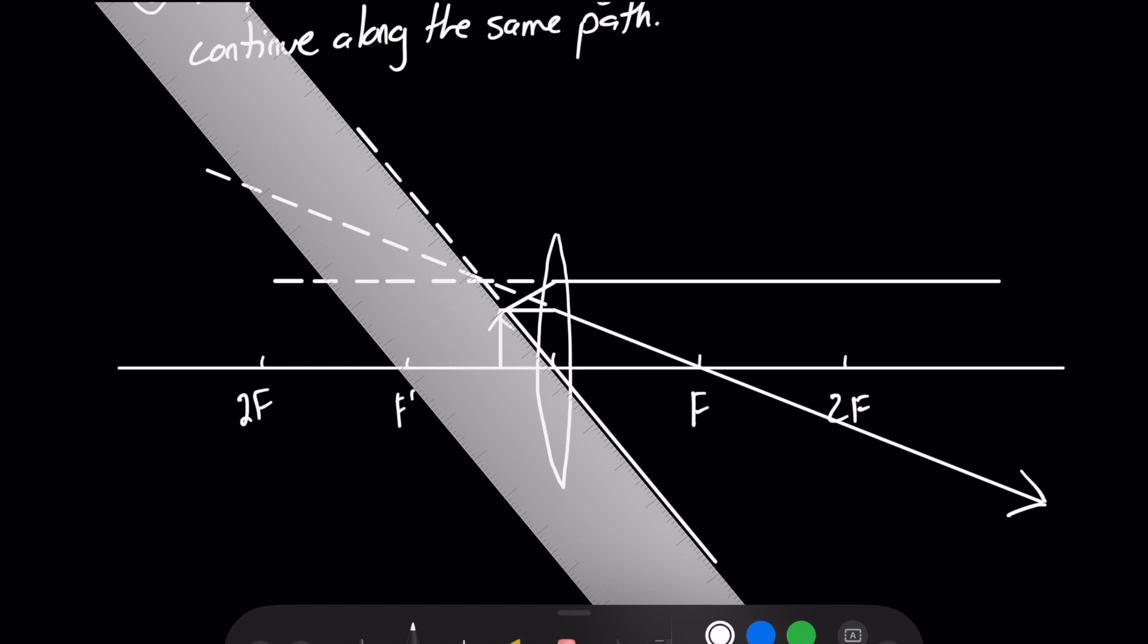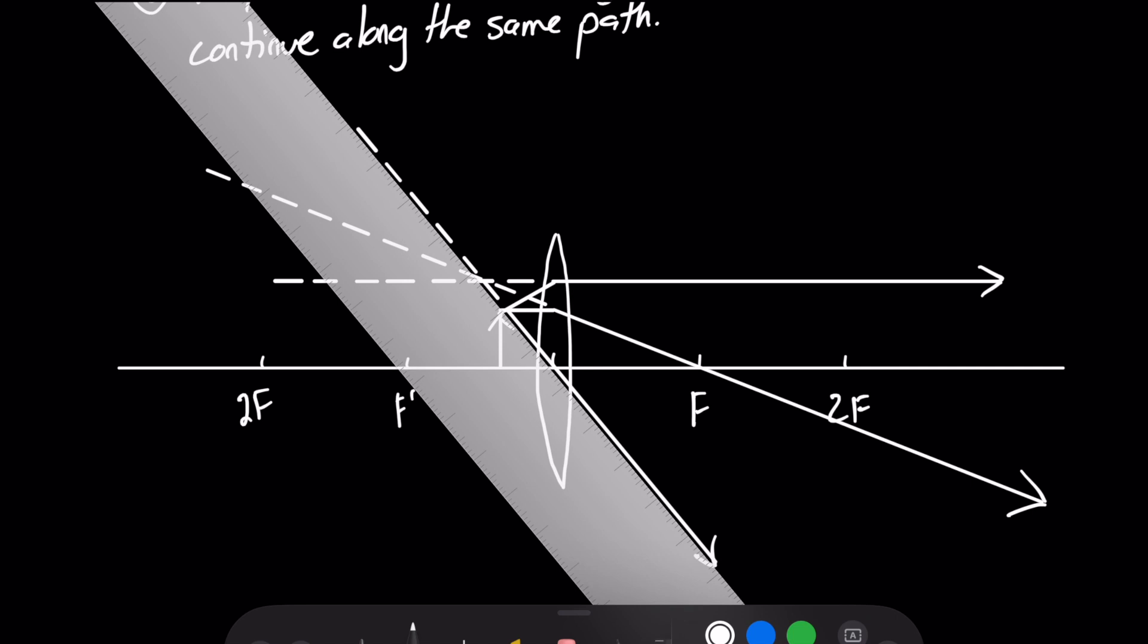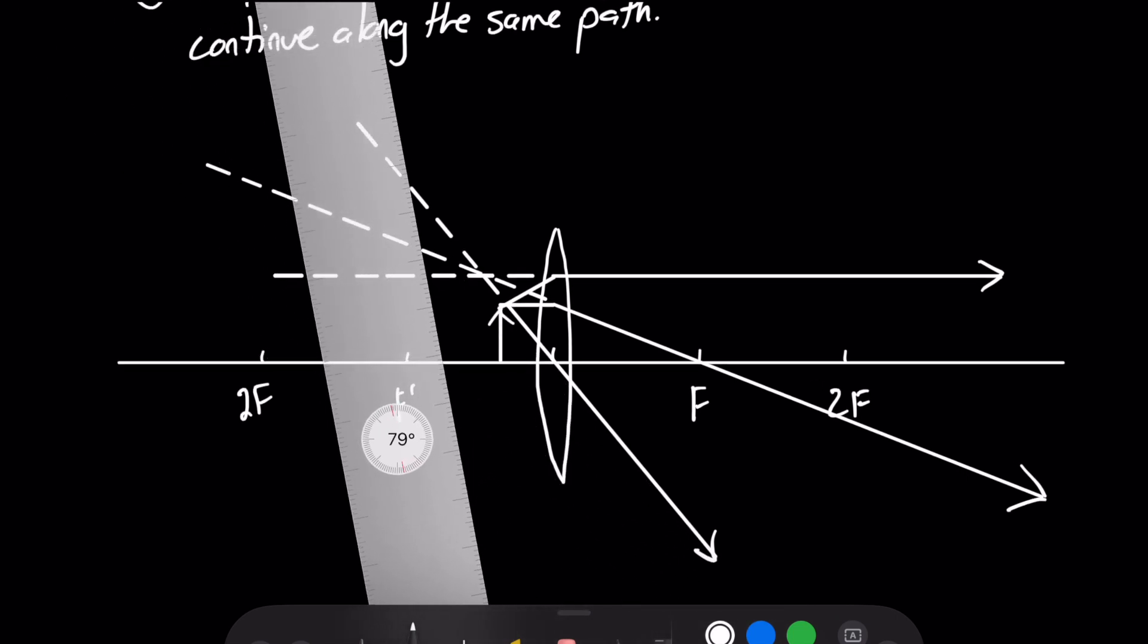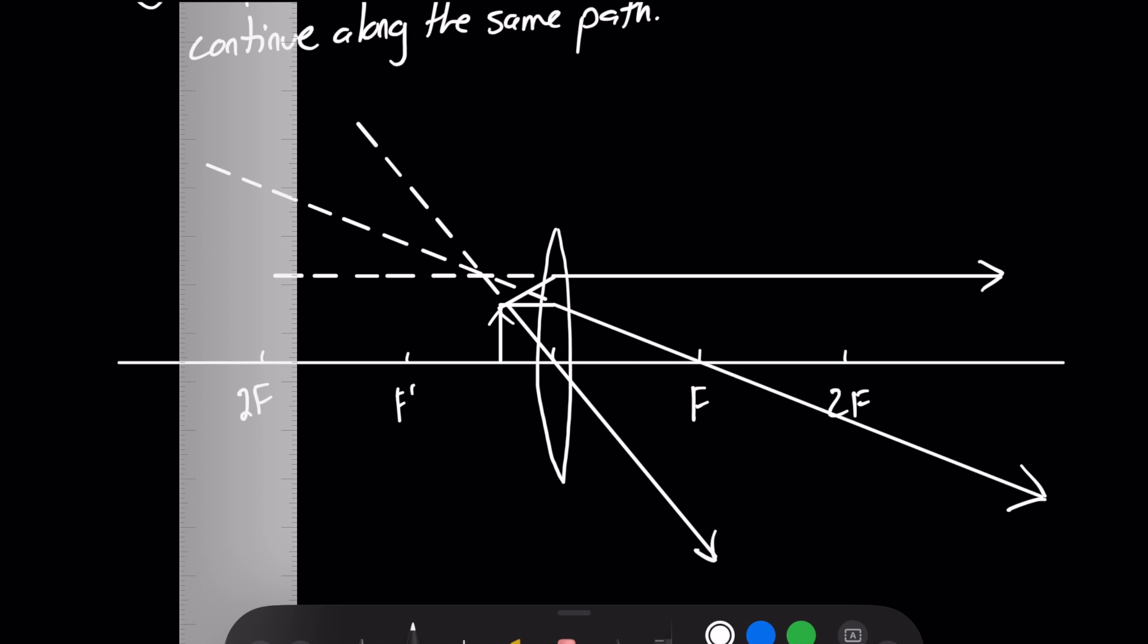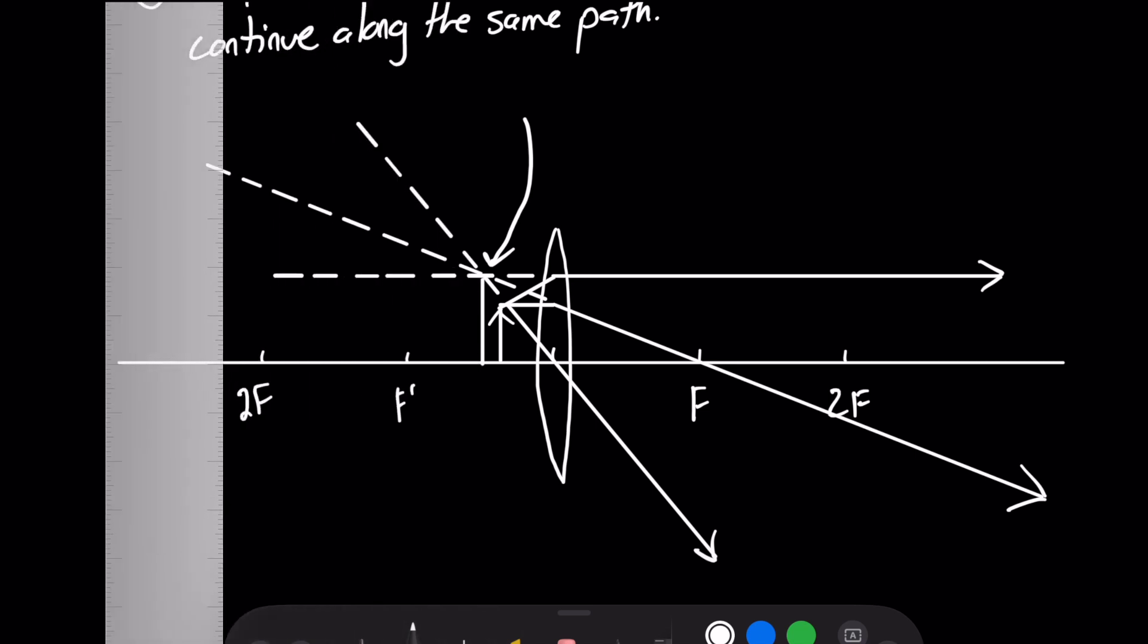And again, we're going to make those dotted lines here. Perfect. So it should look something like that here, folks. And I'm just going to put away my ruler for a second, make sure all my rays have directional arrows. And I'll bring my ruler one last final time to draw my image. Because as you guys can probably see, we have an intersection of all three right there. So we can draw our image from the principal axis to that intersection